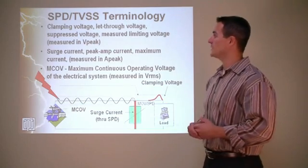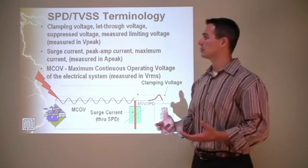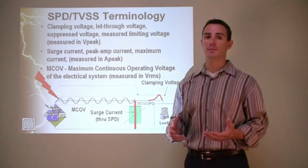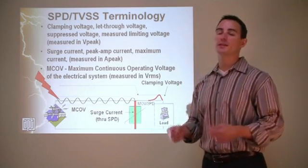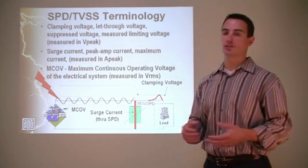Surge current is also known as peak amp current or maximum current. It's measured in A-peak, and it's the current through the SPD when it's conducting a surge.